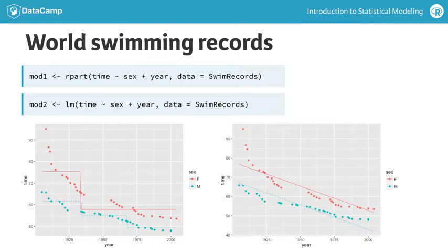The linear model is more satisfactory, showing a gradual improvement in record times. But there's no interaction effect. The two model lines are parallel. The model says records are getting better at the same rate for men and women. The reason the linear model doesn't show the interaction is because it never does unless you ask for it specifically.